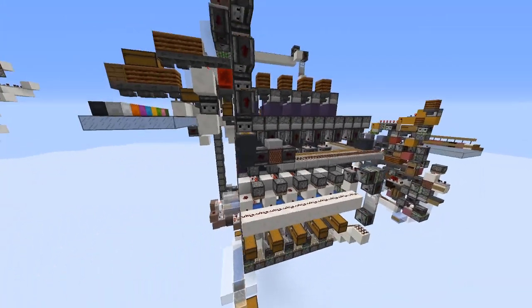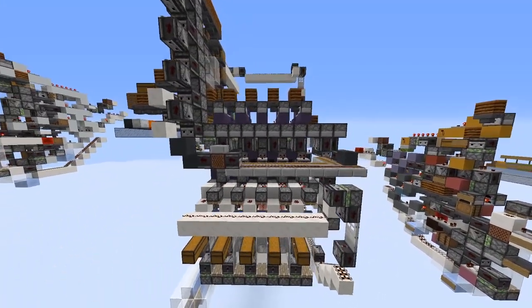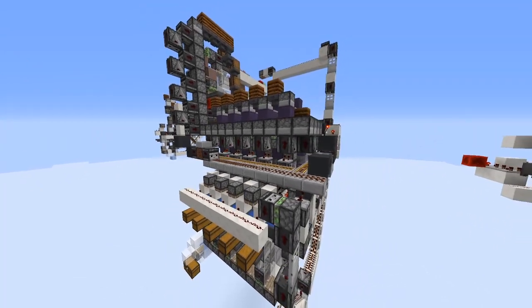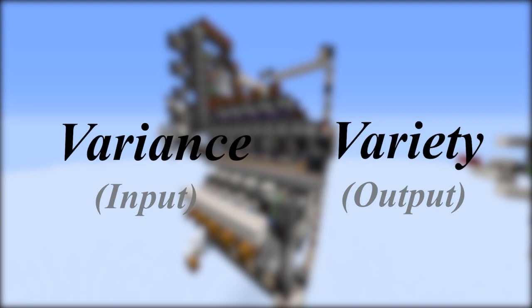As the system runs, I'll describe why you might want to use a system like this. The choice of using cyclical variable sorting comes down to item type variance and item type variety. Item type variance is the number of different item types you send into your sorter. Item type variety is the number of different item types you want to sort. You can think of these as the input and output of your sorter.